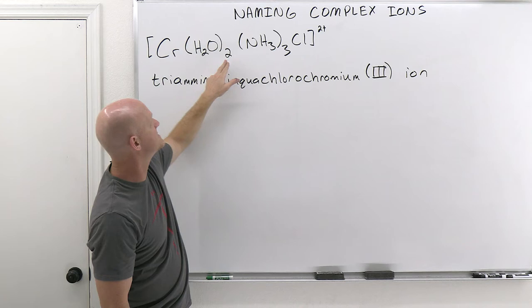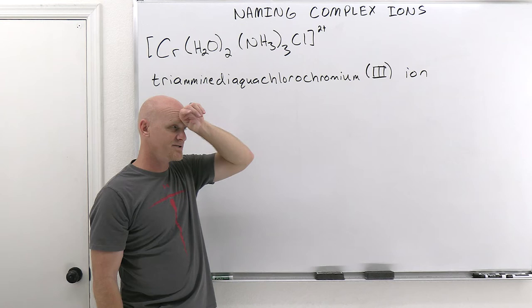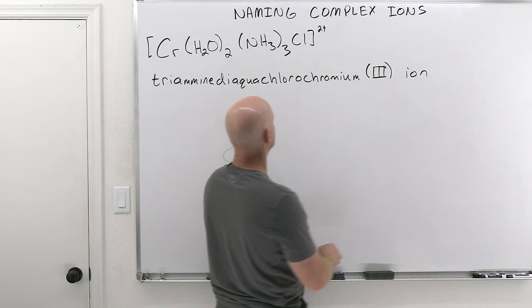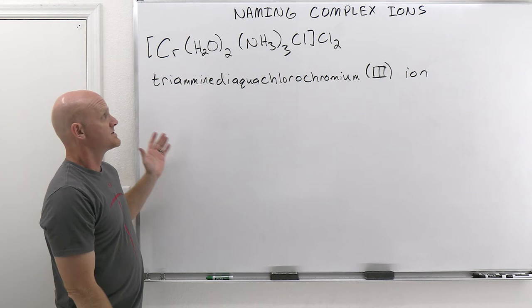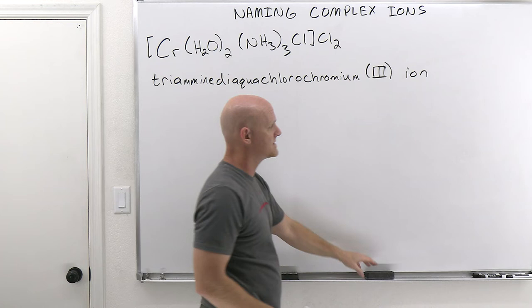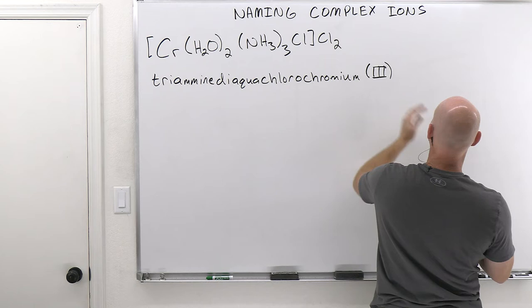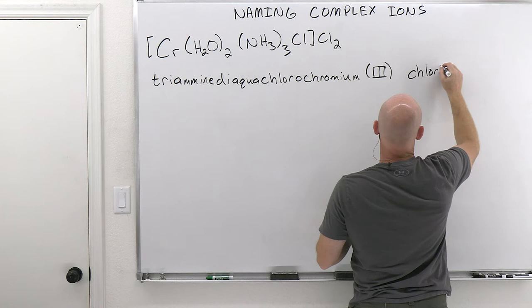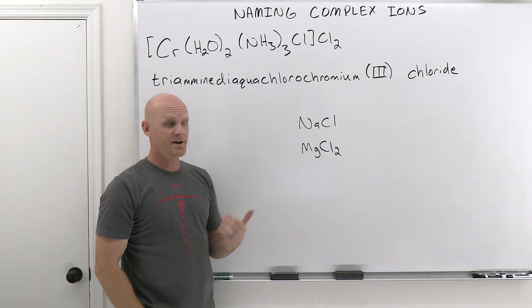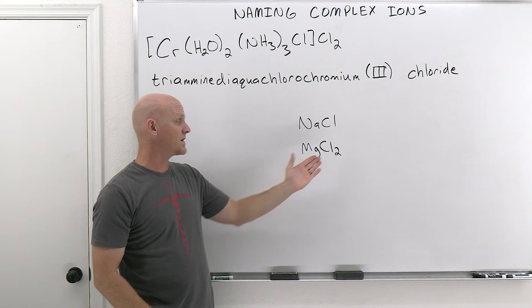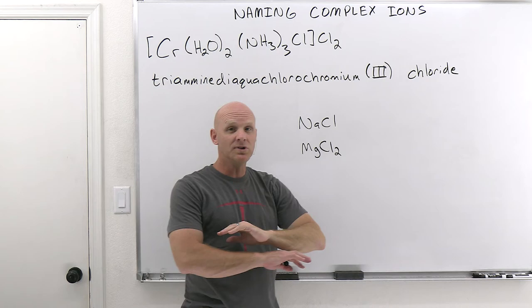We already named this complex cation as triamminediaquachlorochromium(III) ion. Now we make it part of a full ionic compound with two chloride counter ions — an overall neutral compound. When naming the ionic compound, we name the cation first but drop 'ion,' then name the anion. The anion is just a simple chloride — not dichloride or anything like that, just chloride, just as MgCl₂ is magnesium chloride without specifying 'dichloro.'